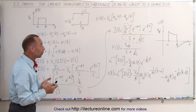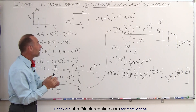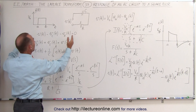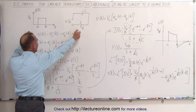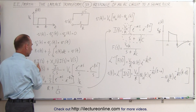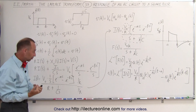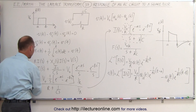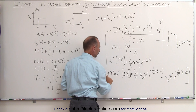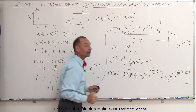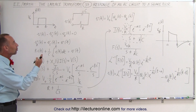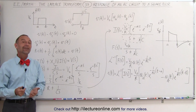The Laplace transform offers a really nice way to handle something like this, which would be difficult to calculate otherwise. We take the voltages around the circuit, convert them using resistance and reactance times the current, transform to the S domain, solve for the current, then take the inverse Laplace transform to get the current in the time domain — which we can graph. That's how it's done.